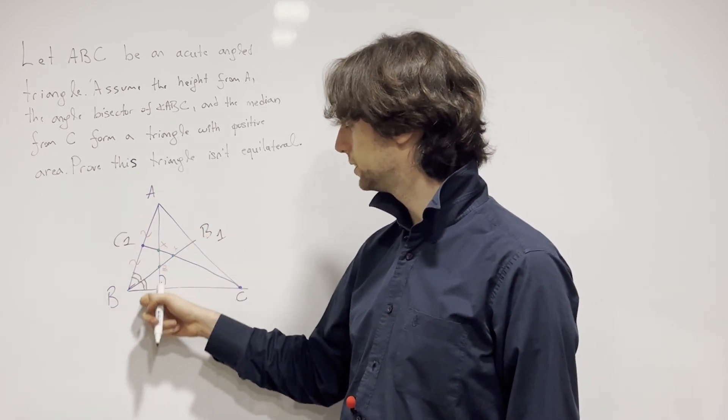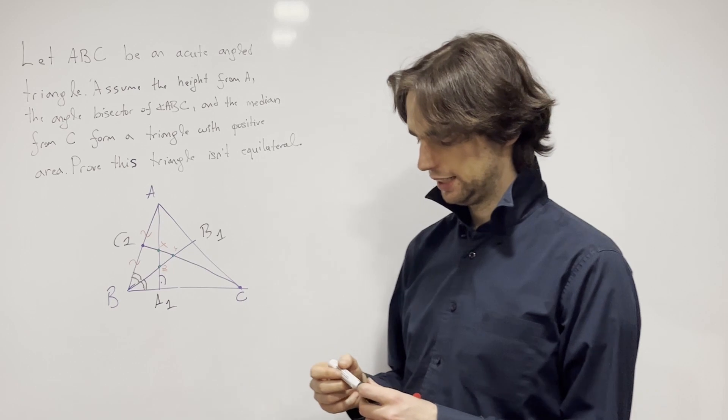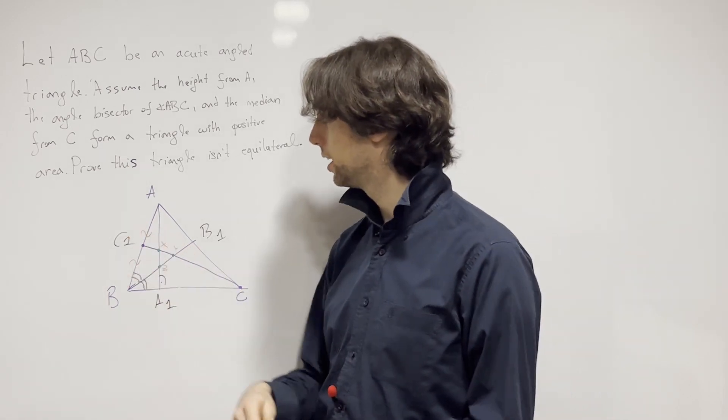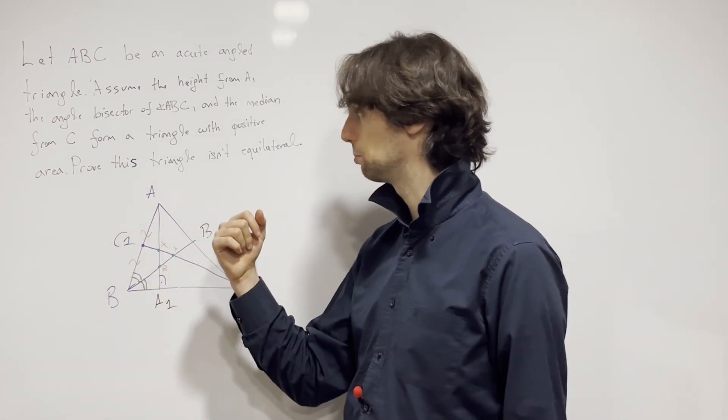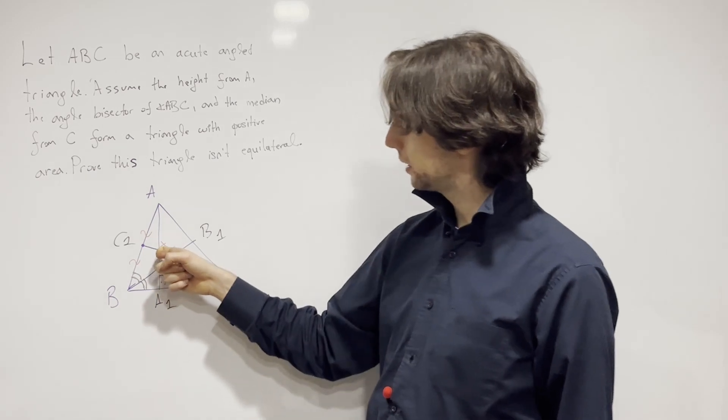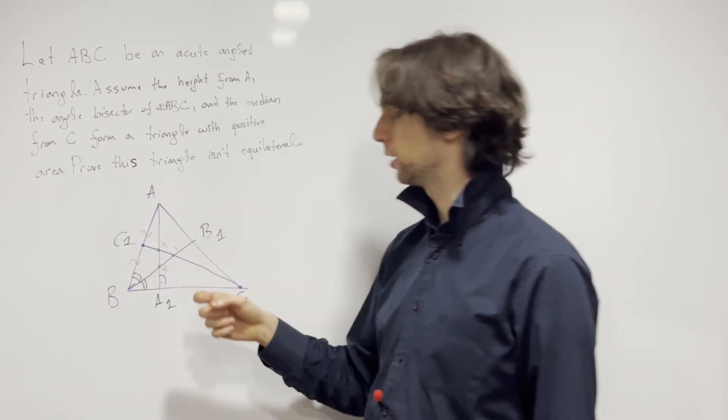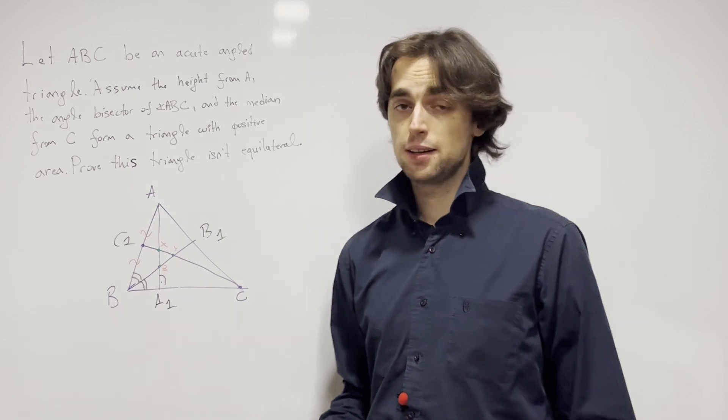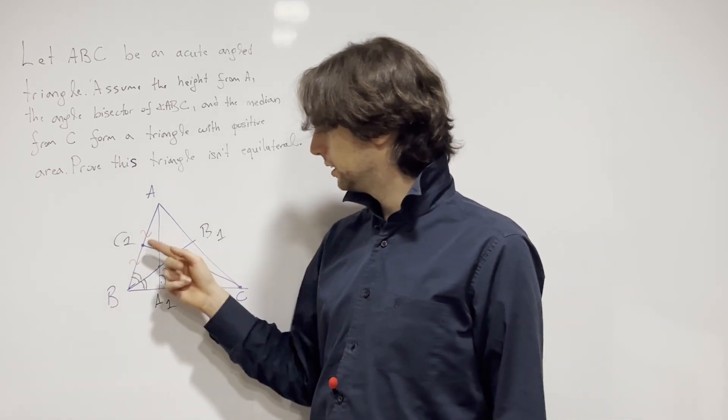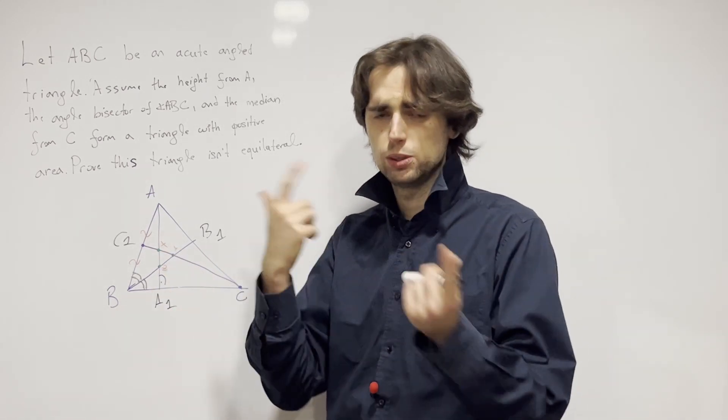BB1 is the angle bisector, CC1 is the midpoint of AB. And it was proved that this triangle we're assuming, that's formed by them, has a positive area. In other words, it means that these three lines don't all pass from the same point.